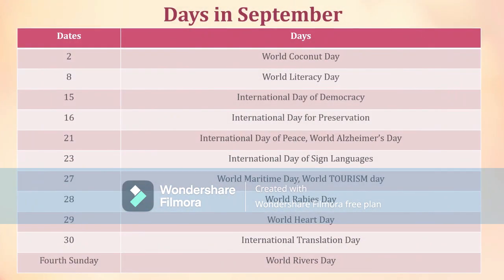Days in September. September 2nd: World Coconut Day. September 8th: World Literacy Day. September 15th: International Day of Democracy. September 16th: International Day for Preservation. September 21st: International Day of Peace and World Alzheimer's Day.